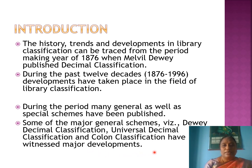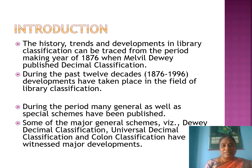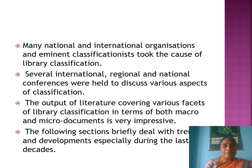To summarize this slide: 1876 is the significant starting year in the history of library classification. The period from 1876 to 1996 saw almost all major developments in the field of classification. Both special and general schemes were published, including DDC, Universal Decimal Classification, and Colon Classification — all of which witnessed major developments.